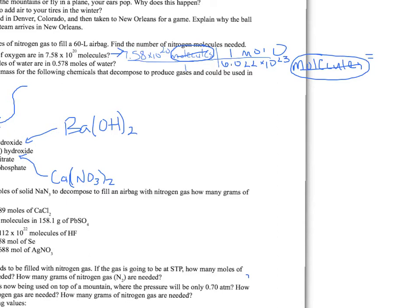When we divide, we're going to take 7.58 times 10 to the 20th divided by 6.022 times 10 to the 23rd, and what we get is 0.00126. With 3 sig figs — we had 3 sig figs in the 7.58 — so we should have 3 sig figs in our answer. Our units left over are moles of oxygen, so the answer is 0.00126 moles of oxygen. That's number two.